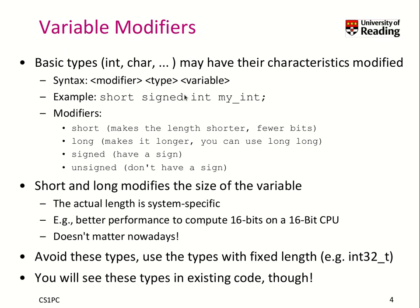So I have an integer 'myint' and I want it to be signed and shorter. There are a couple of modifiers: 'short' makes the length shorter in fewer bits, 'long' makes it longer with more bits, and 'long long' makes it longer than long. 'Signed' means the data is stored in two's complement for those data types, and 'unsigned' means you don't have a sign.